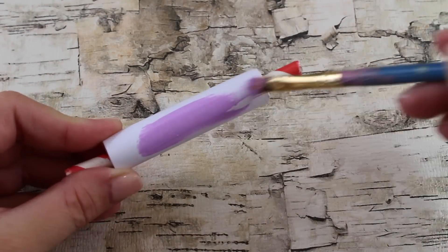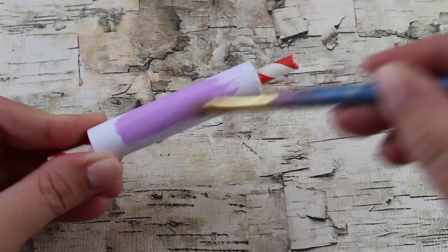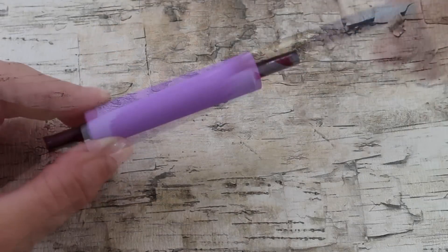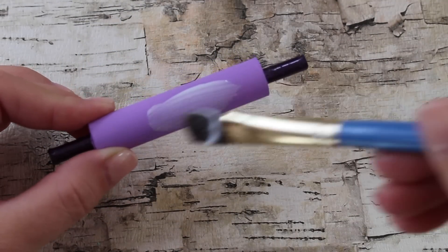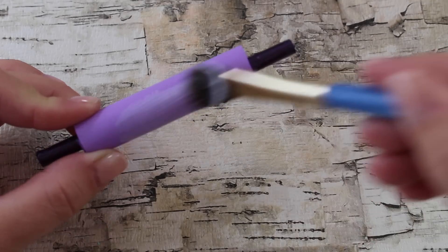Now you can paint your rolling pin whatever color you choose. Let it completely dry. And you can also seal it with Mod Podge since it's just paper.